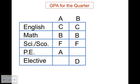Let's go ahead now and replace them as we did before. C's are worth two points, so that's going to be two twos. Math, I got a B. That's going to be three points for the A day and B day. Science, I got zero. PE is worth four points and my elective, one.